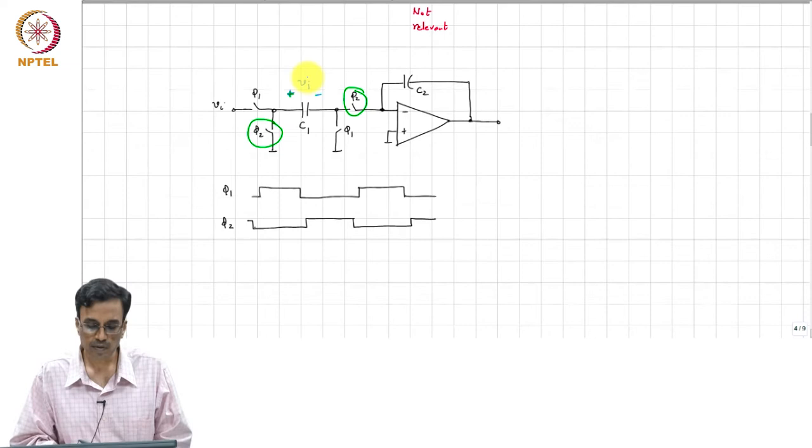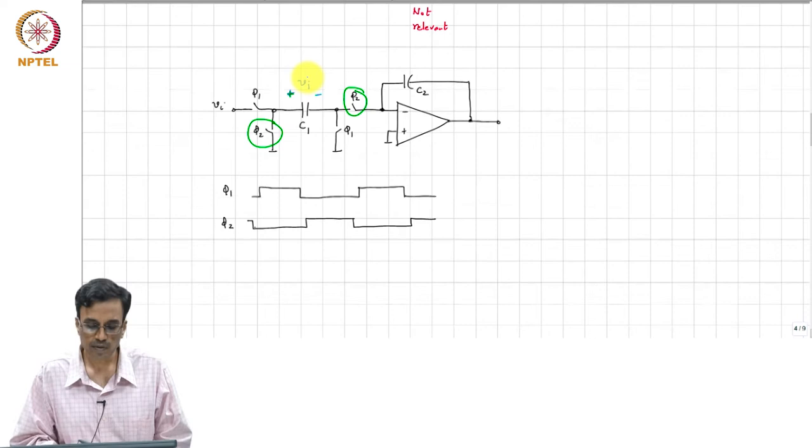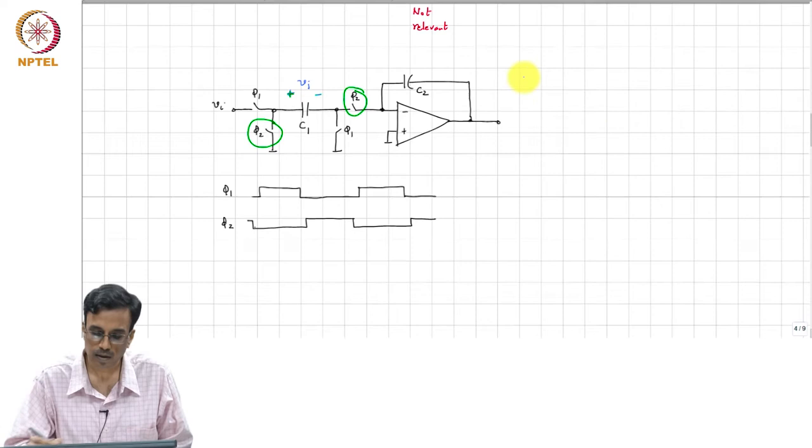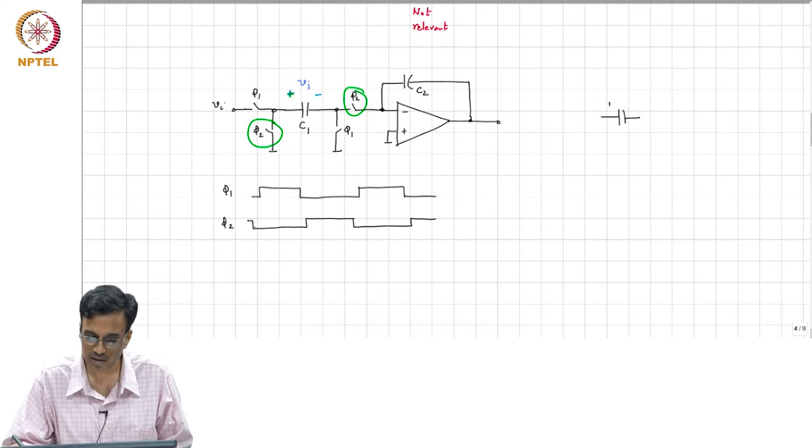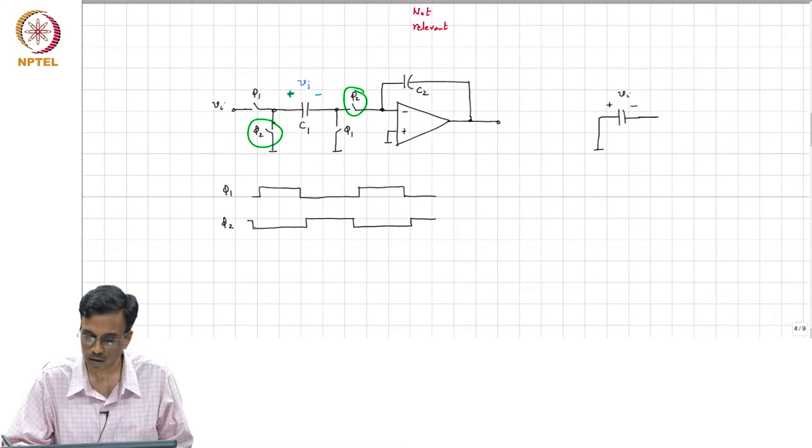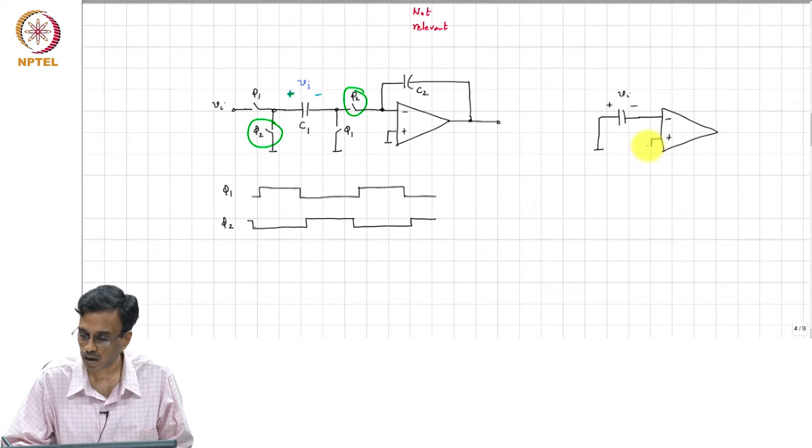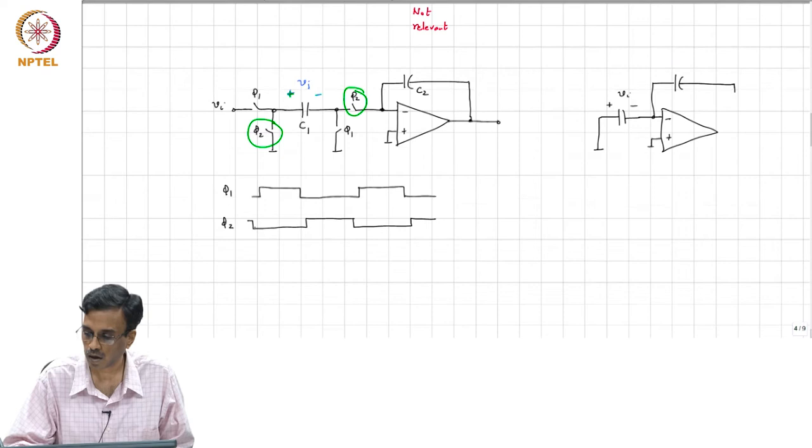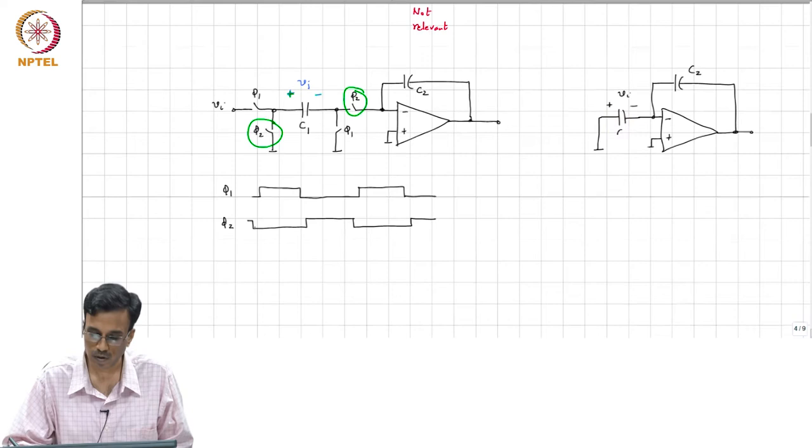During phase 2, what happens? The capacitor C_1 which was charged to V_i is connected to ground, is connected to C_2.